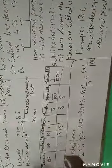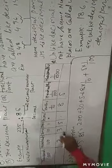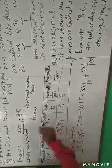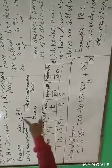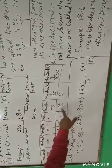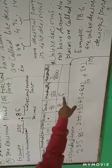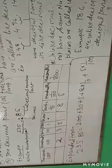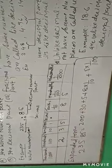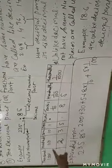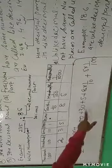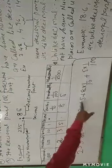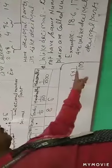235.85 — here I will show you: 2 is in the hundreds place, 3 is in the tens place, and 5 is in the units place. Now after the decimal: 8 is in the tenths place, and 5 is in the hundredths place. So it should be expanded like this: two into hundred = two hundred, three into ten = thirty, five into one = five, eight into one by ten, and five into one by hundred.